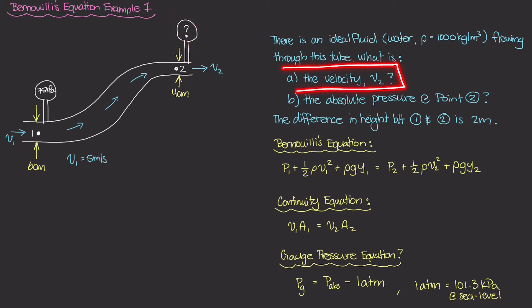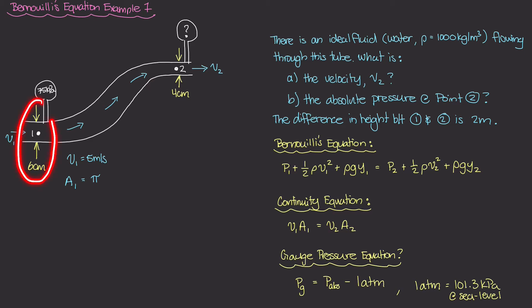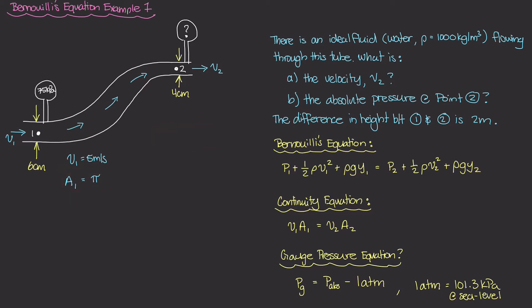For part A, we find velocity v2 at point 2. Because this is an ideal fluid we can use the continuity equation: v1·A1 = v2·A2. On the left, v1 equals 5 meters per second. For area A1, since the cross section is a circle, A = π·r². The diameter is 6 centimeters, so the radius is 3 centimeters, or 0.03 meters. Therefore A1 = π × (0.03)² square meters.